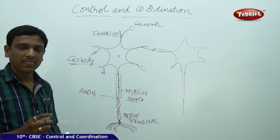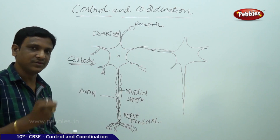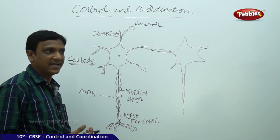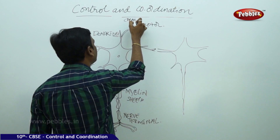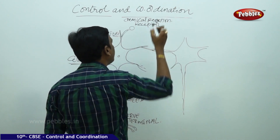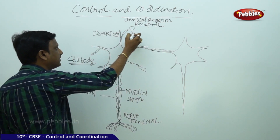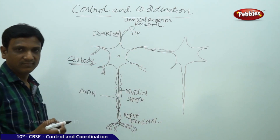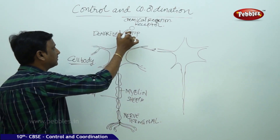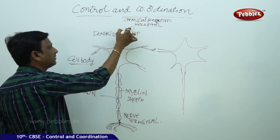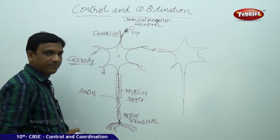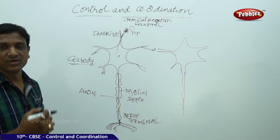Our sense organs have receptors which will receive the information in the form of a chemical reaction. The identification of change in the environment is done in the form of a chemical reaction. This chemical reaction takes place at the dendritic tip and sets off an electrical impulse. Nerve cells are conductors of electrical impulses.